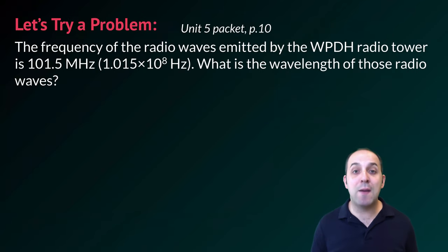This is in our unit 5 packet on page 10. The frequency of the radio waves emitted by the WPDH radio tower is 101.5 megahertz. So mega means a million of the base unit, so a million hertz. And so if we want to put this into scientific notation, this would be 1.015 times 10 to the eighth hertz. I hope that makes sense. If it doesn't, I would encourage you to go back and take a look at our scientific notation discussion and our metric system discussions. What is the wavelength of those radio waves? Pause the video and see if you can do this on your own. And then when you're ready, let's go through it together and talk about how we solve it.